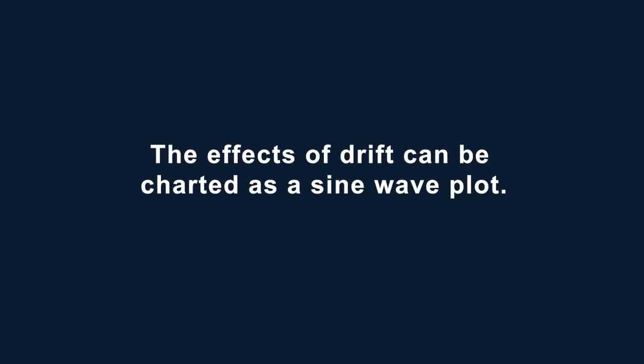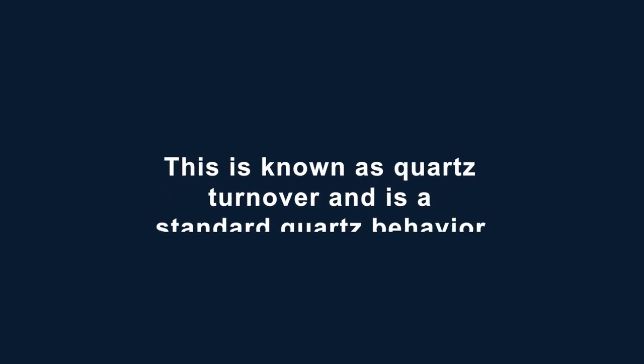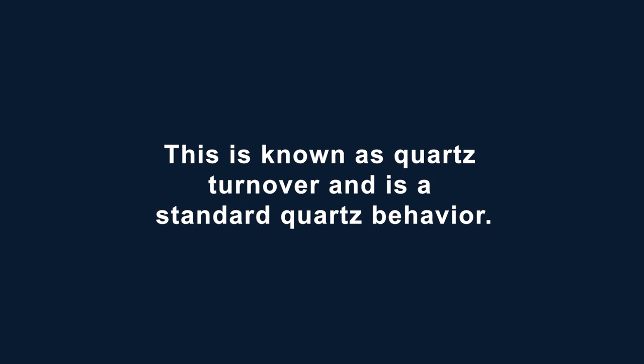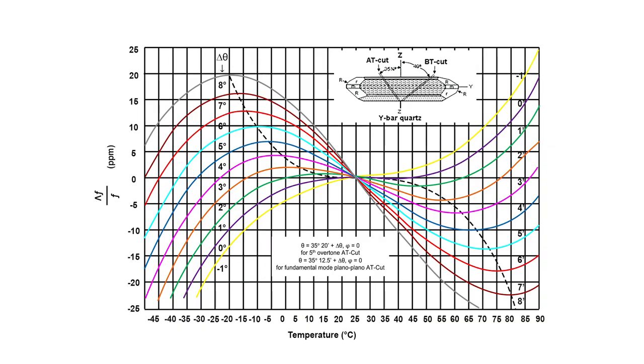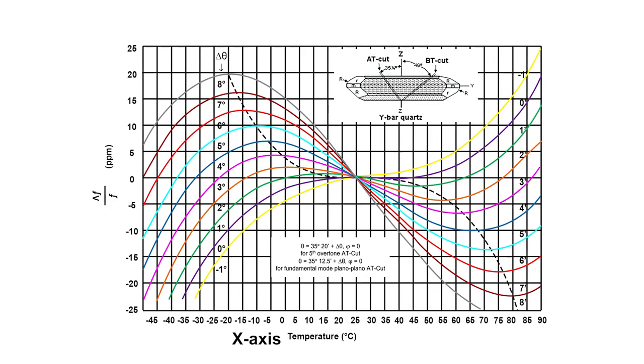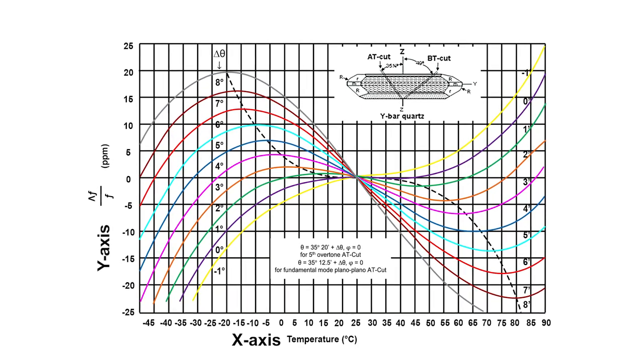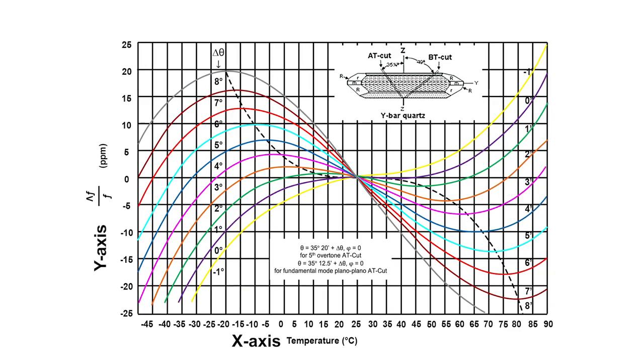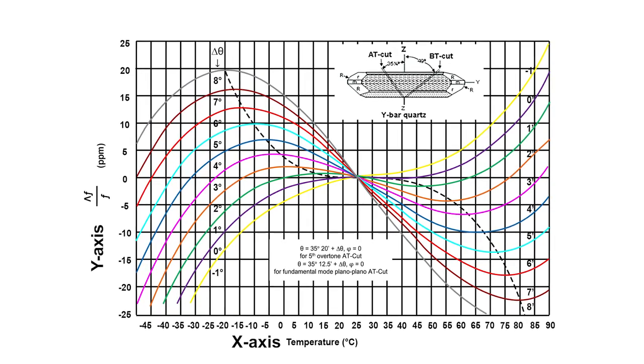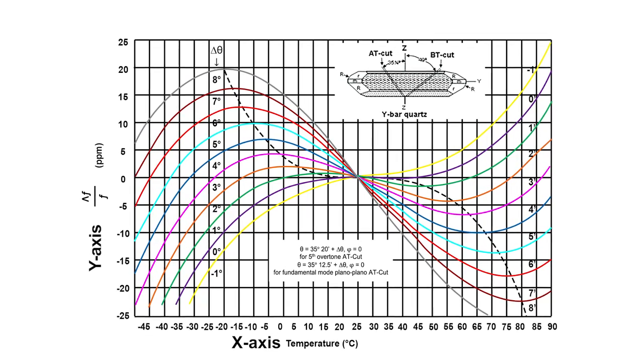The effects of drift can be charted as a sine wave plot. With some increase in temperature the rate or frequency will increase, but after a certain point the rate will then decrease. This is known as quartz turnover and is a standard quartz behavior. In this figure the x-axis is temperature and the y-axis is the frequency change in parts per million. The colored curves show different achievable stabilities over temperature based on the angle cut of the quartz.